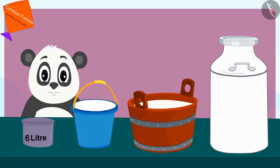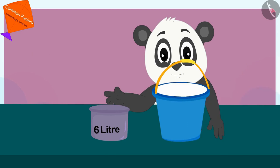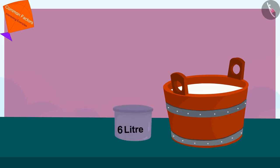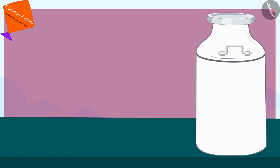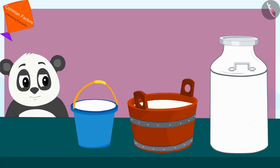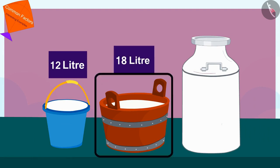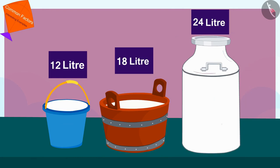Golu began measuring the milk filled in all those pots with a 6 liter vessel. To measure the milk filled in this vessel, Golu used that 6 liter pot twice. For this pot, he used the 6 liter pot three times. And to measure the milk filled in this pot, Golu used his 6 liter vessel four times. In this way, Golu came to know that 12 liters of milk are filled in this pot, 18 liters in this one and 24 liters of milk in this pot.